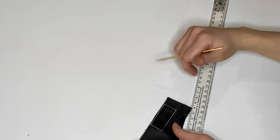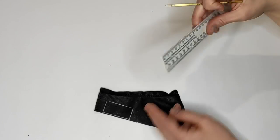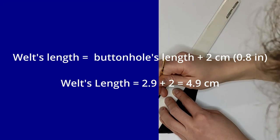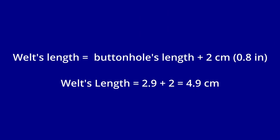Next we need to cut out two rectangles which are called welts. The welt's length is going to be our buttonhole's length plus 2 centimeters. In my example, 2.9 plus 2 will equal 4.9 centimeters.